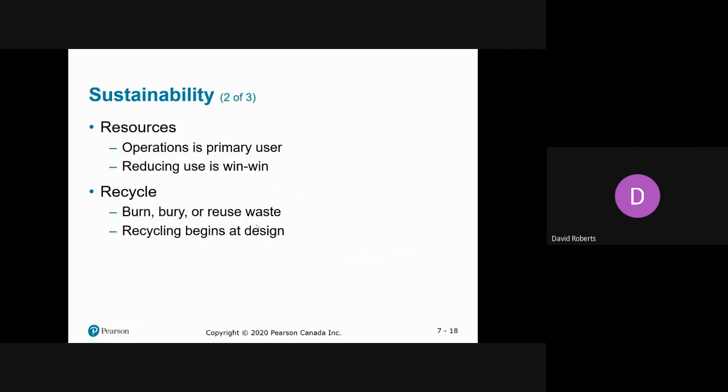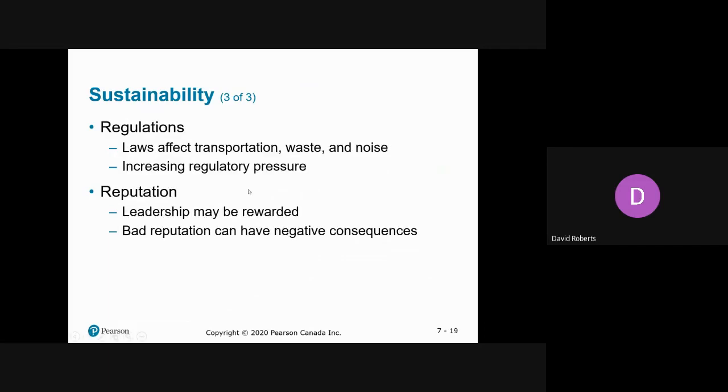Resources: we're trying to reduce the amount of resources, so reduce packaging, reduce the thickness of the paper, or just come out with a package that doesn't use as much plastic or things along that line. Recycling, you're very familiar with. Reuse the waste. I gave an example in an earlier lecture about a company where there's overspray and rather than just throwing that out or letting it run into the sewer system, they would reprocess it, filter it, and then use it again. Regulations: laws for transportation, even things like noise, making loud noises, etc. You have to follow these rules, they can be laws or bylaws.